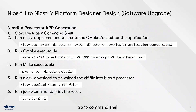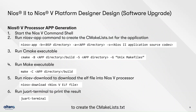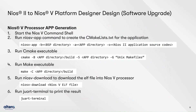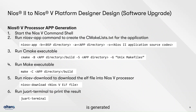Go to the command shell, start the Neos 5 shell, and run the Neos 5 app command to create a CMakeLists.txt for the application. Run the CMake executable, then run make. After make is successful, the Neos 5 processor software ELF is generated.